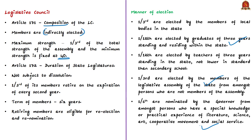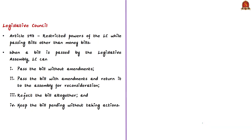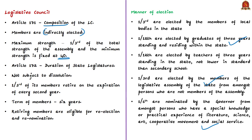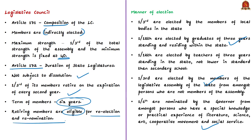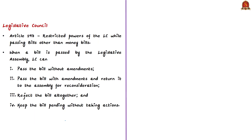The remaining one-sixth is nominated by the Governor from persons who have special knowledge or practical experience in the fields of literature, science, art, cooperative movement, and social service. Coming to the duration under Article 172, the council is not subject to dissolution. One-third of its members retire on the expiration of every second year, so a member continues for a term of six years. Retiring members are eligible for re-election and re-nomination any number of times.